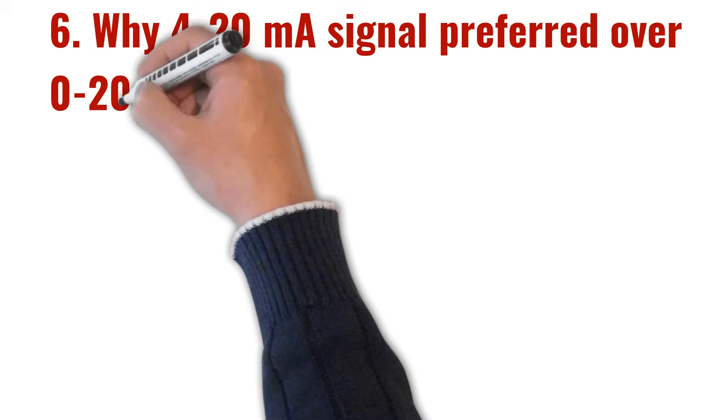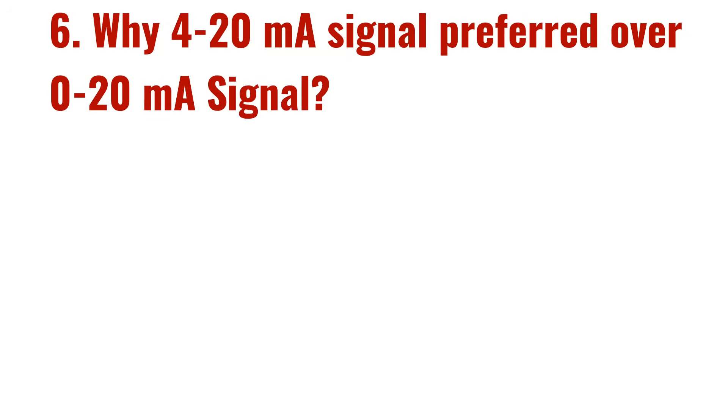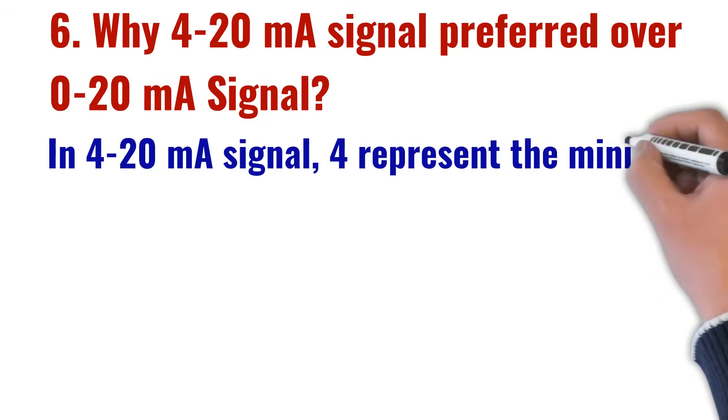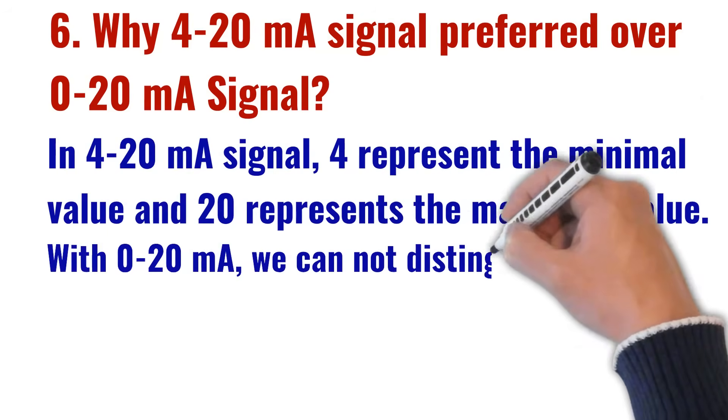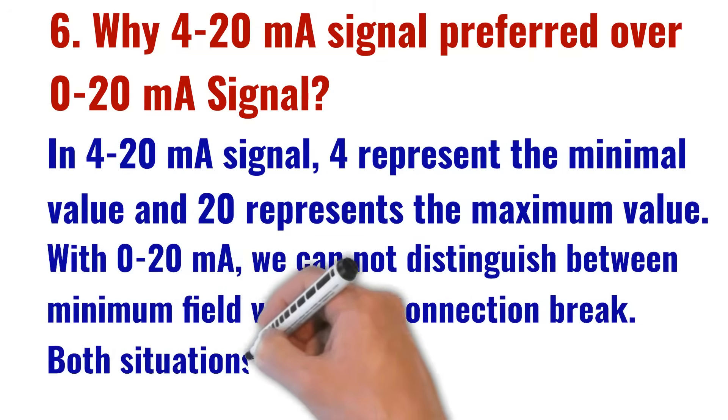The sixth most frequently asked interview question is: why is the 4-20 mA signal preferred over the 0-20 mA signal? In the 4-20 mA signal, 4 represents the minimal value and 20 represents the maximum value. With 0-20 mA, we cannot distinguish between the minimum field value and a connection break — both situations output 0 mA. In 4-20 mA, when the value is minimum, the transmitter gives 4 mA, while in a connection breakage it gives 0 mA. This way, we can easily distinguish between a minimum signal and a connection break, which is why 4-20 mA is preferred over 0-20 mA.